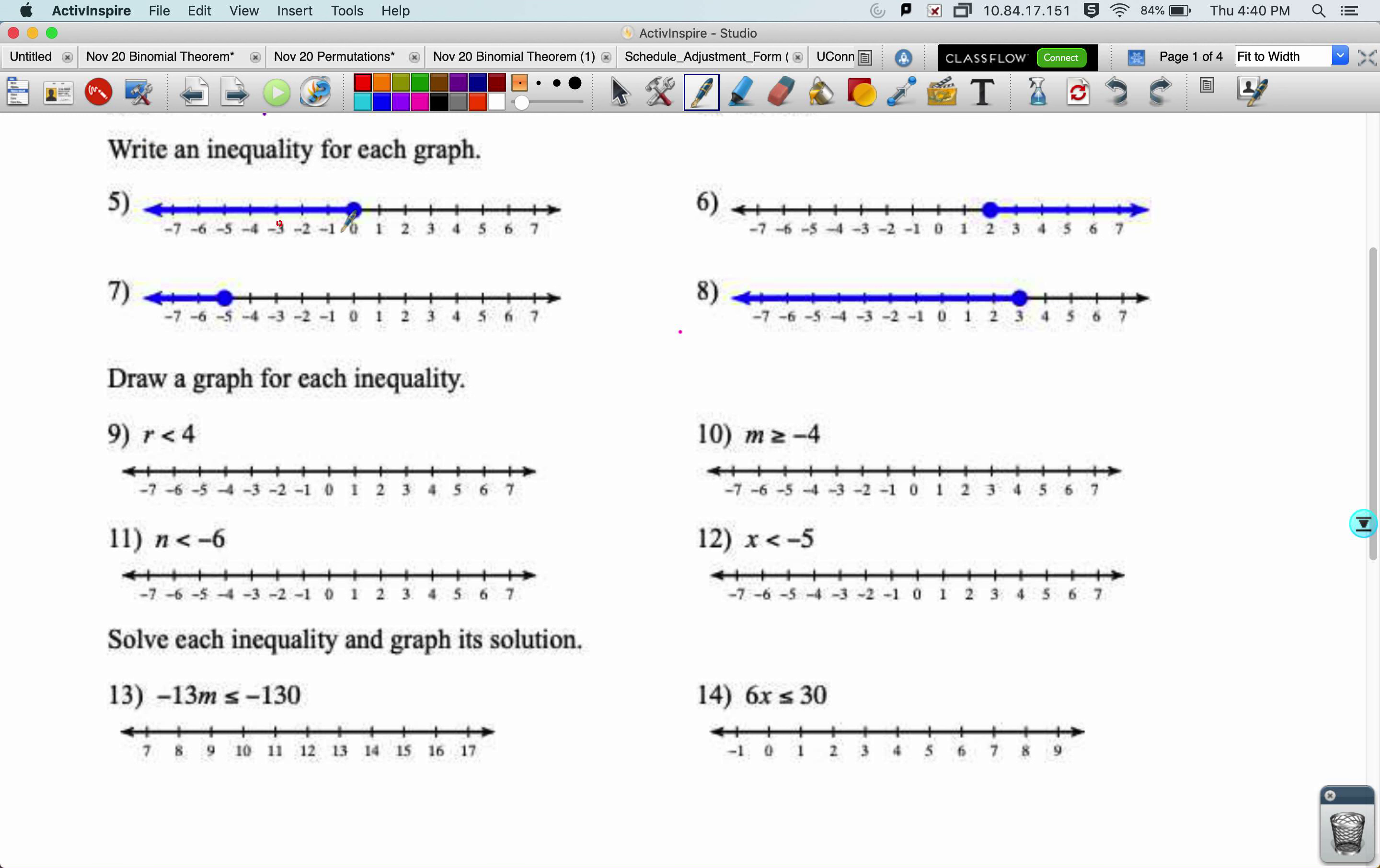All right, when writing an inequality given a graph, we can pick whatever variable we want. I like x, you might want to do j or m, whatever you want. So you just write the variable that you've picked, and then you look at the end value, and you write that numerical value. I see that we have a dot at zero.